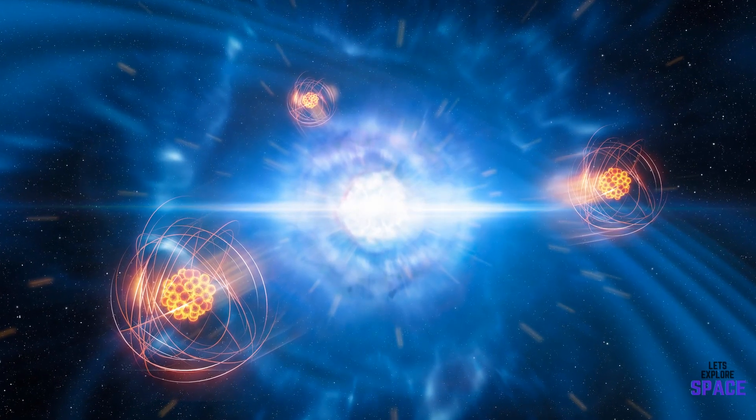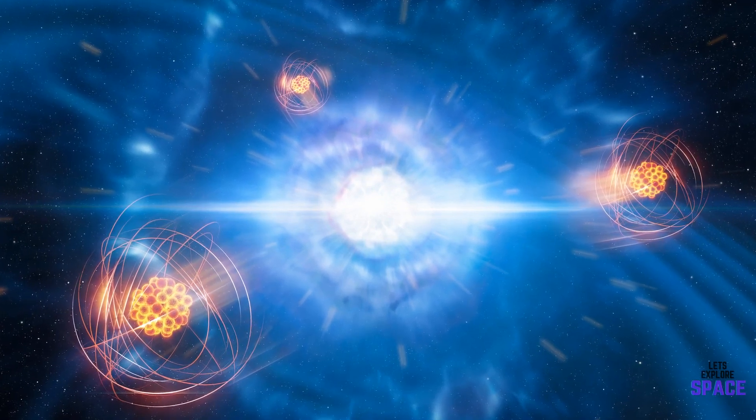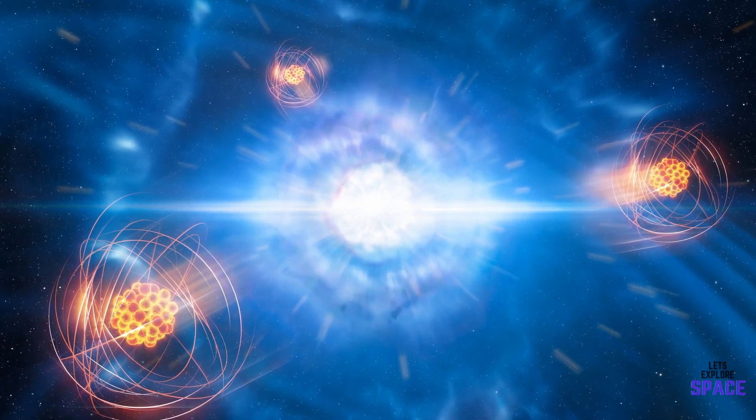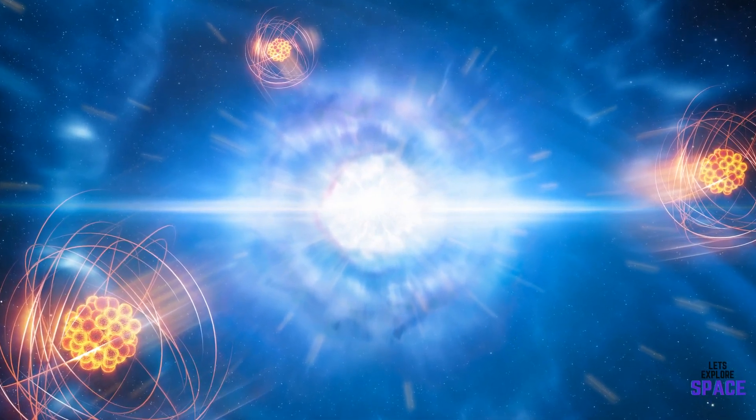Some neutron stars are so dense that if you took a sample of mass the size of a typical matchbox, it could weigh up to 3 billion tons. It's hard to understand how something that small can weigh that much.